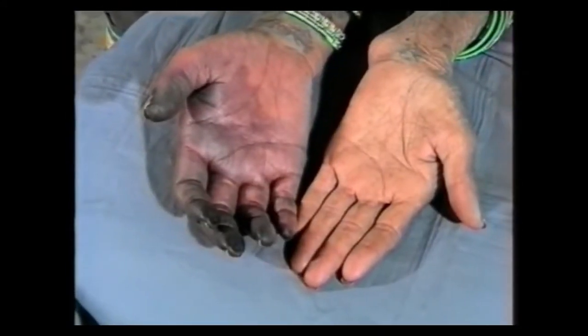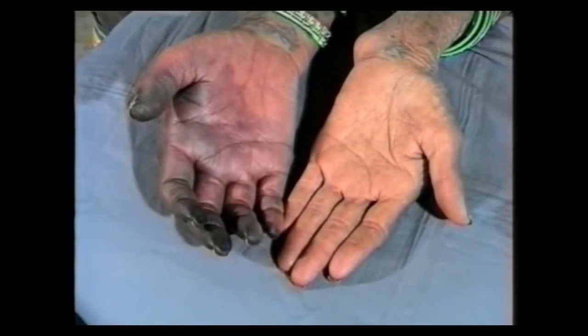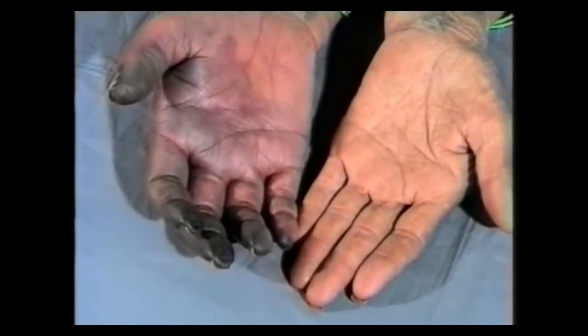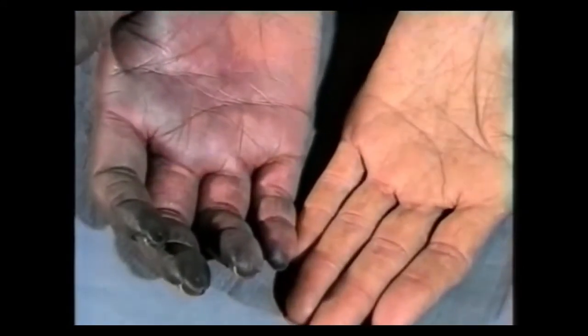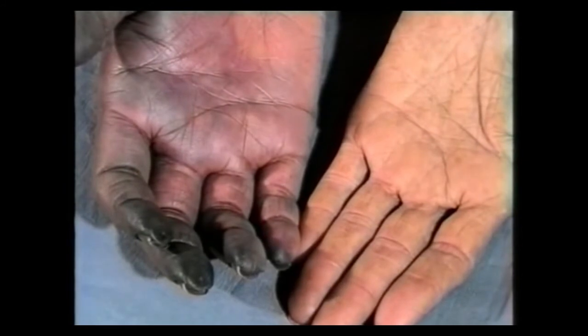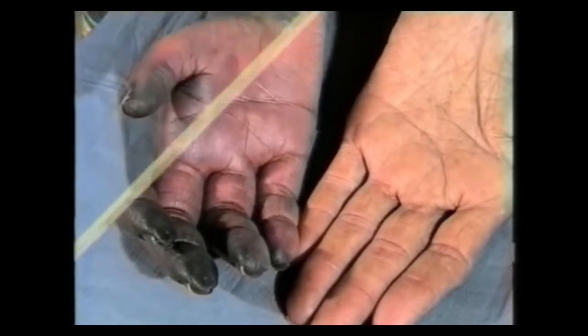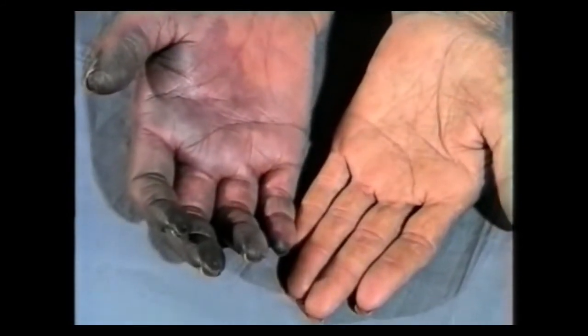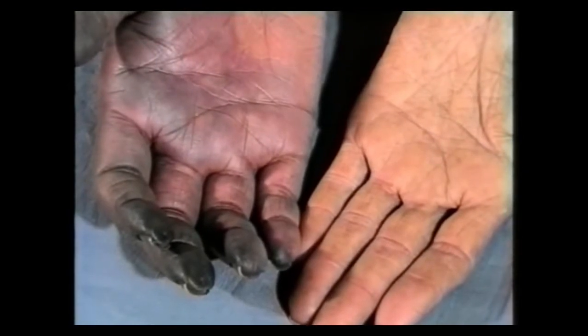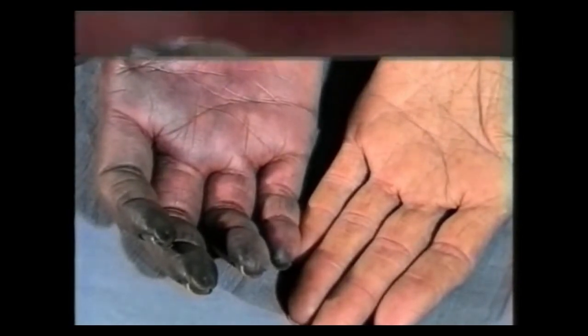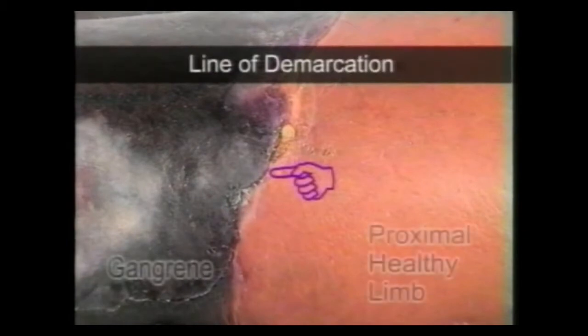A wet gangrene, as seen in the fingers of the right hand, shows black discoloration but the tissues are edematous and swollen, and there is no clear cut demarcation between the gangrenous and the normal limb. In comparison, the dry gangrene shows a line of demarcation between the dead gangrenous part and the normal living limb, as seen in this leg.